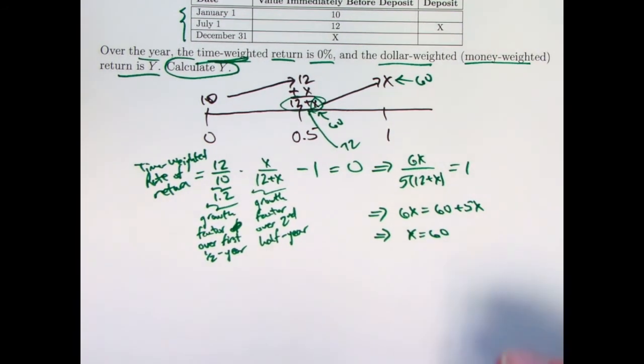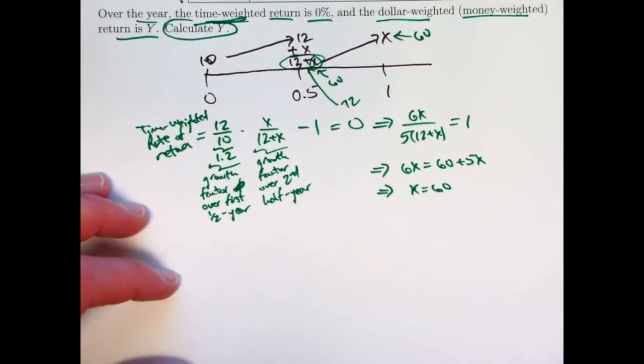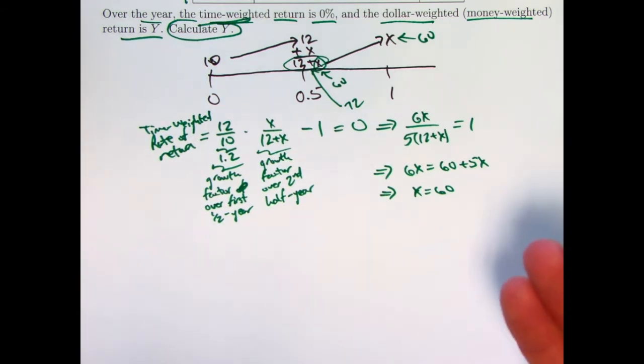The goal now is to find y, which is the dollar-weighted or money-weighted rate of return. It probably would have been better to use the letter i for it. But I'll go ahead and use the letter y like they used. So what do you do for the dollar-weighted or money-weighted rate of return? It's really like an internal rate of return, a yield rate,